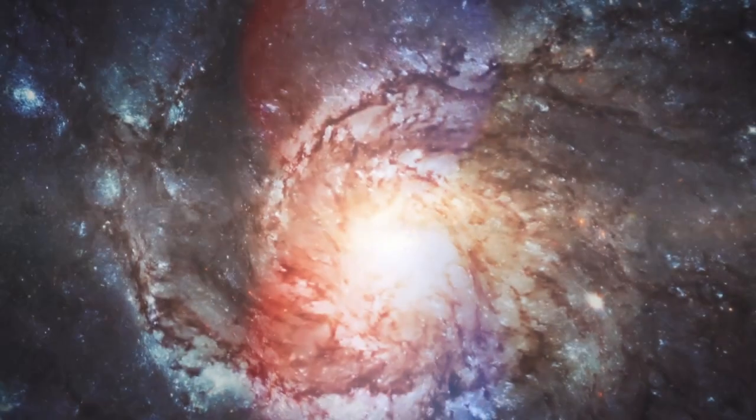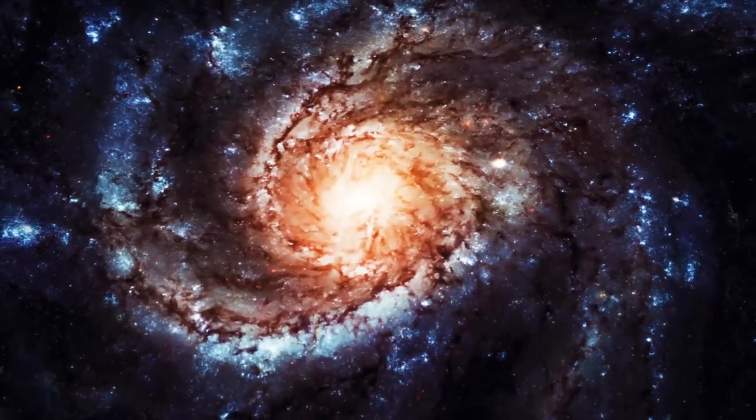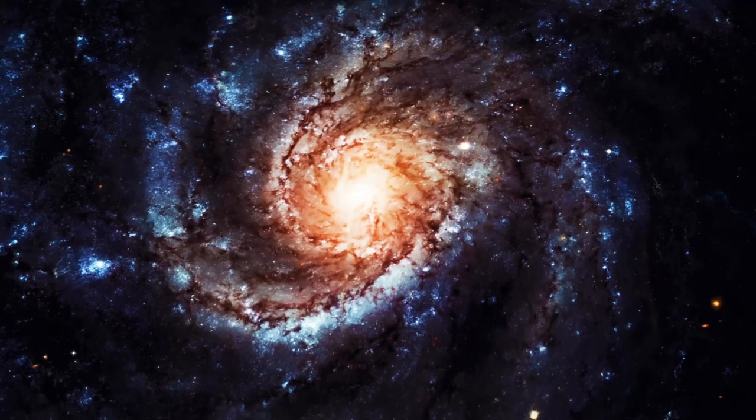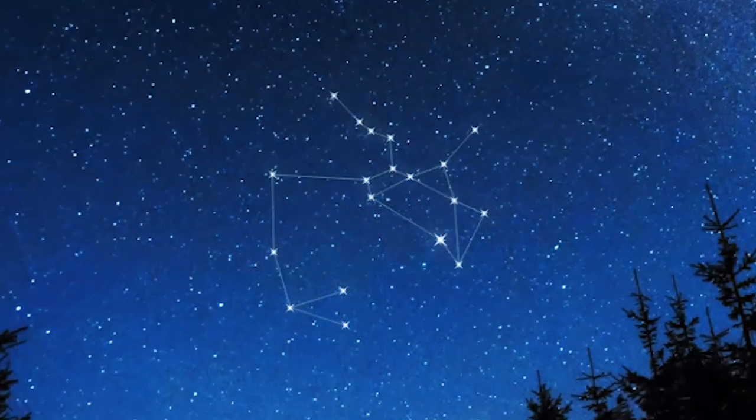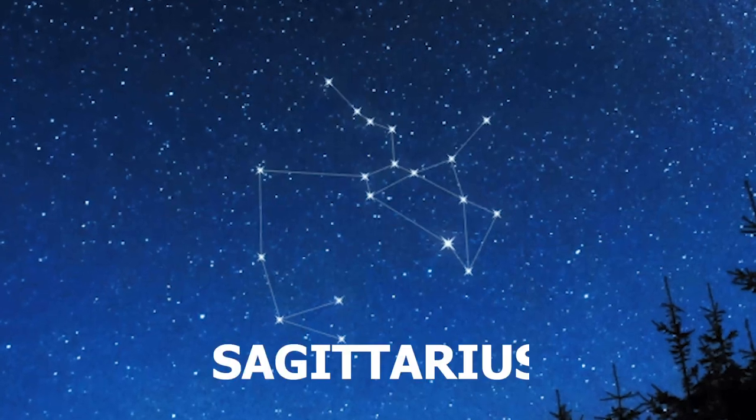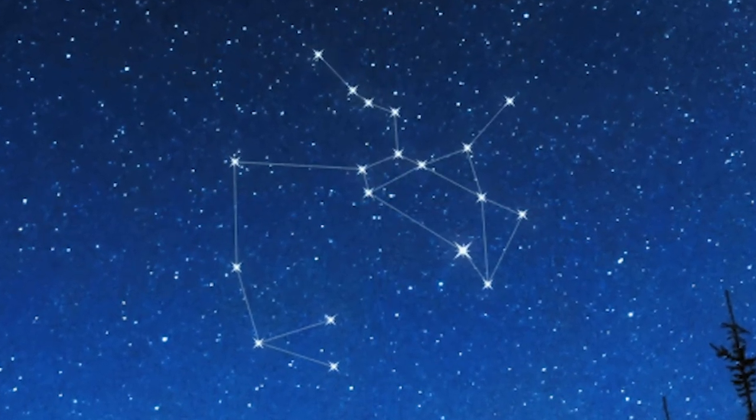From our sideways viewpoint, 26,000 light-years from the Milky Way's center, the hourglass stands at a whopping 45 degrees above and below the galactic core in the constellation of Sagittarius. It takes up half of our southern sky.